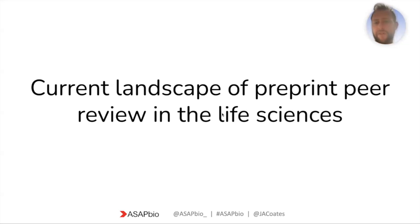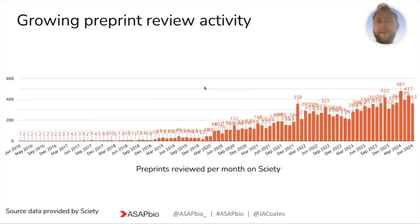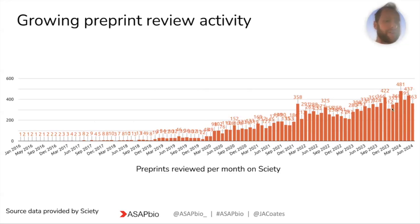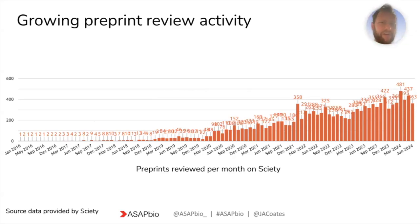So what does the current landscape of preprint peer review look like? This is very much focused on the life sciences. It is a growing activity — it didn't start until 2016-17 and at very low numbers. We are now up to roughly about 2% of all preprints being journal-independently peer reviewed, and that number is increasing every year.